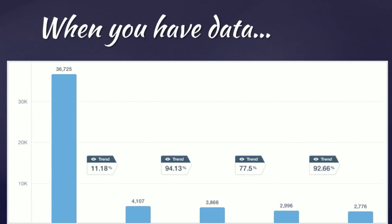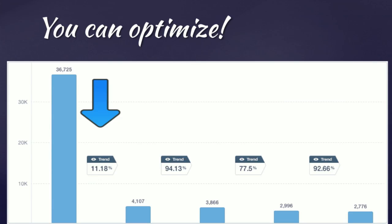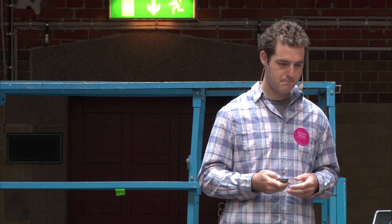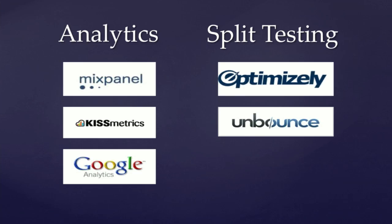When you have the data, it's obvious where a weak point in the funnel is. In this example, between step one and step two, nearly 90% of people don't continue past step one. So when you have the data, you can optimize — and what I mean by optimize is split test. Here are some example tools you can use for measuring and testing: Mixpanel, Kissmetrics, Google Analytics — all great tools for measurement — and Optimizely and Unbounce for split testing.